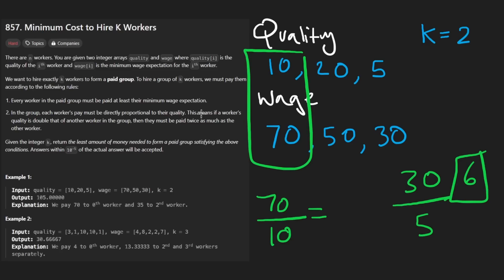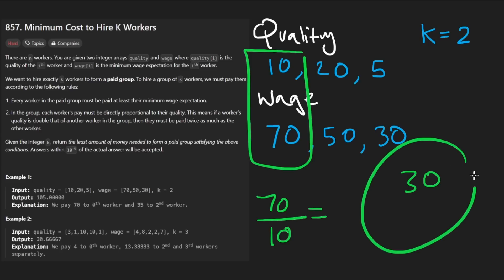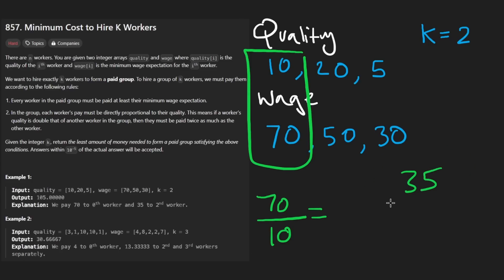So this is just one big problem of ratios. What we do instead is to make this person's ratio the same as the other person's — we pay them 35 for five units of work, which is the same ratio: seven.